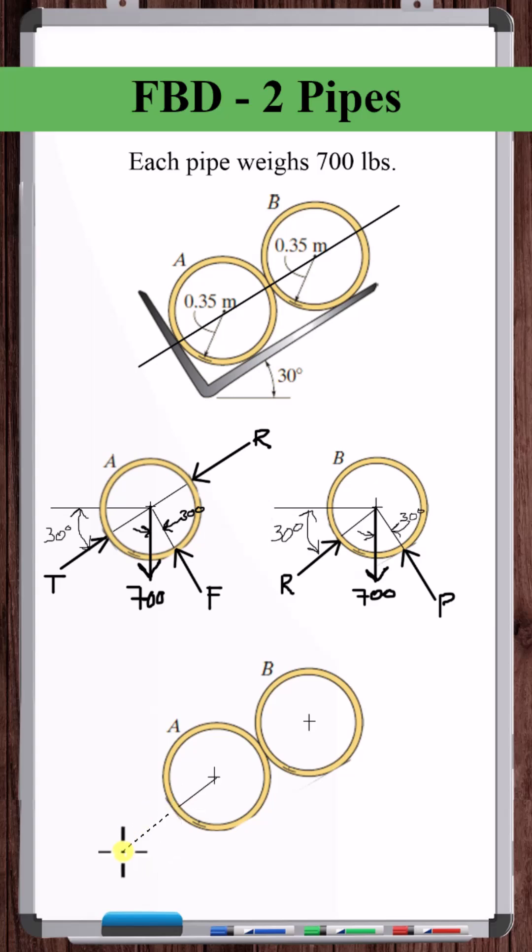Now both pipes together. We've got T here at 30 degrees. The weight of each pipe and the normal force on each pipe acting at 30 degrees from the vertical.